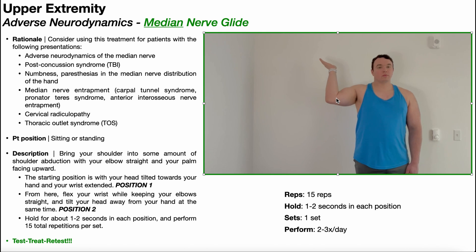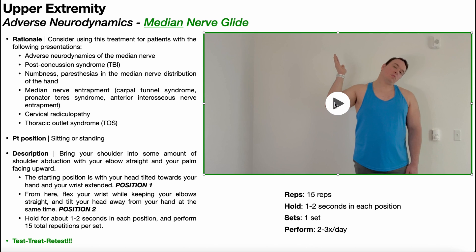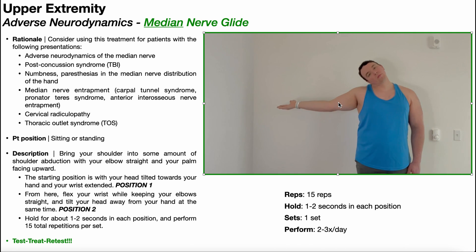Here's the second form of the median nerve glide. Position one is pretty much the same as before: shoulder abducted, elbow extended, wrist slightly extended, and head tilted toward the hand. But now the movement will not occur at the wrist — the movement will occur at the elbow. So between the elbow and the head. From position one, moving into position two: instead of the wrist moving, now it's the elbow that flexes while my head tilts away from my hand — or away from my elbow. We just oscillate between position one and position two. Dosage is exactly the same.